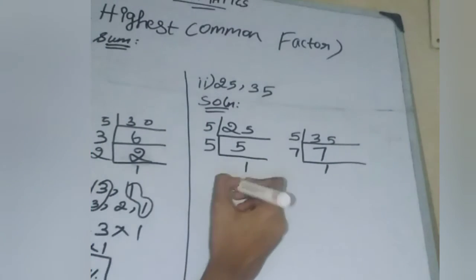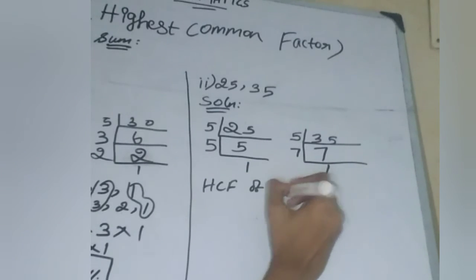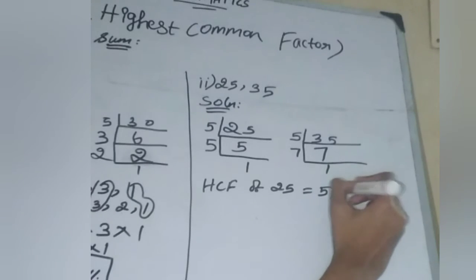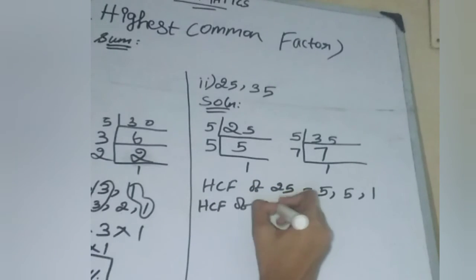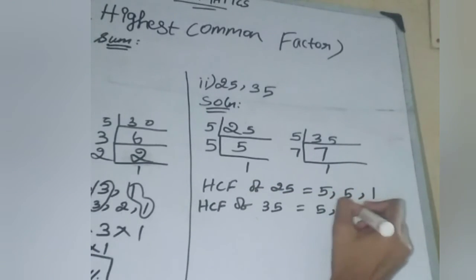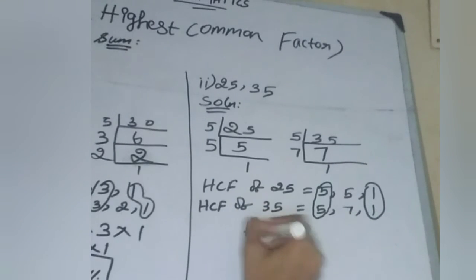Let's find the answer. The factors of 25 are 5, 5, and 1. The factors of 35 are 5, 7, and 1. The common factors are 5 and 1, so the HCF equals 5 times 1, which equals 5.